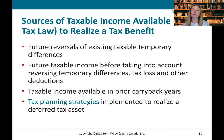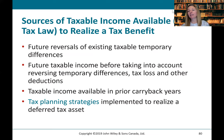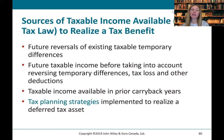Sources of taxable income available to realize a tax benefit include: future reversals of existing temporary differences, future income before taking into account reversing temporary differences, tax losses and other deductions, taxable income available in prior carryback years, and tax planning strategies implemented to realize the deferred tax asset. This outlines how we're going to utilize the deferred tax asset — either by generating taxable income, through reversing temporary differences that create taxable income, or by carrying back income if it's not more likely than not.